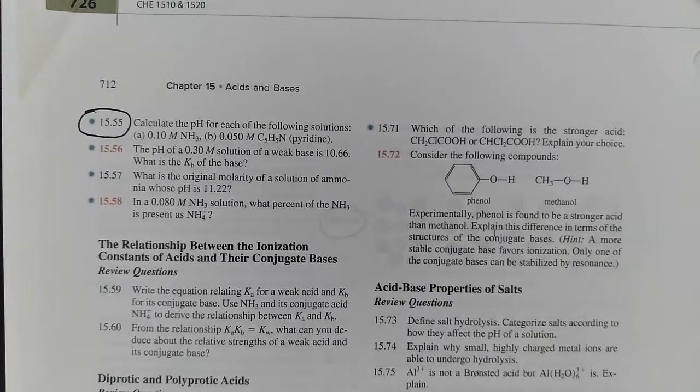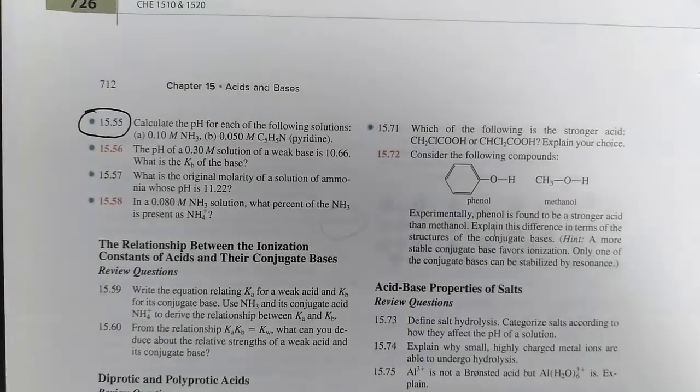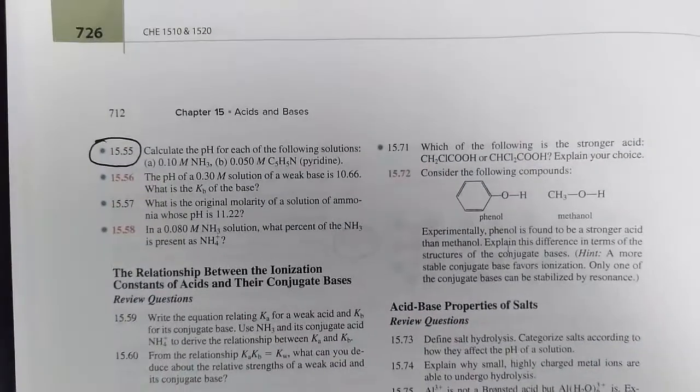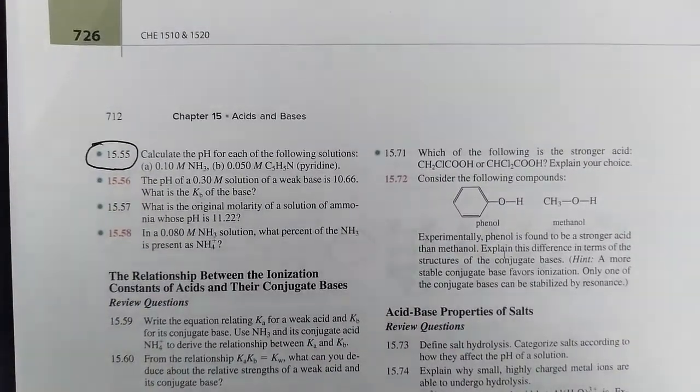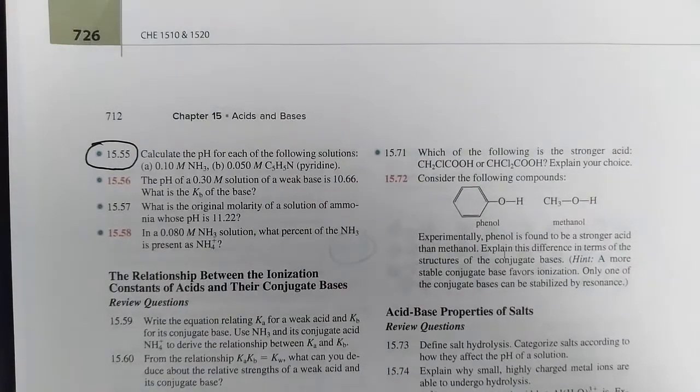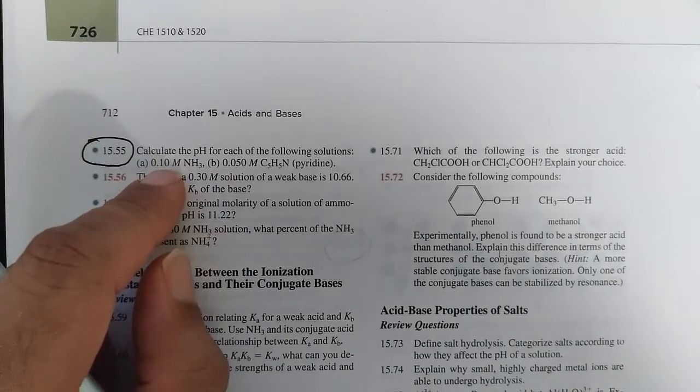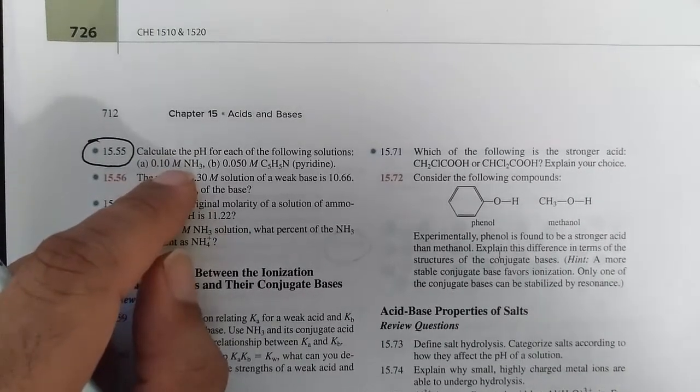Kb means that we will have OH- that's going to be liberated when NH3 reacts with water. A Ka would be H+ liberated when acid reacts with water. A Kb is OH- hydroxide ion that's liberated when the base reacts with water. So here's that equation.